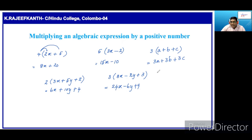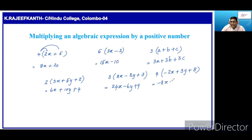Here, one more example: 4 into minus 2x plus 3y plus 8. Here also, we have to multiply by 4 each term of this expression. Then, minus 4 into plus 3y is 12y. Plus, 8 into 4 is 32.